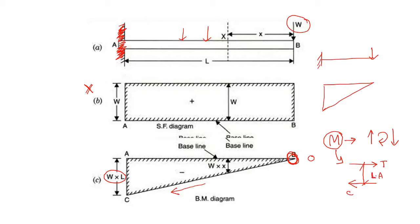Here you can see that if the tensile force and compressive force are constant throughout the beam, then the lever arm must be increasing because the moment is increasing. So if moment is increasing, the lever arm is also increasing, provided the tensile or compressive force remains constant.